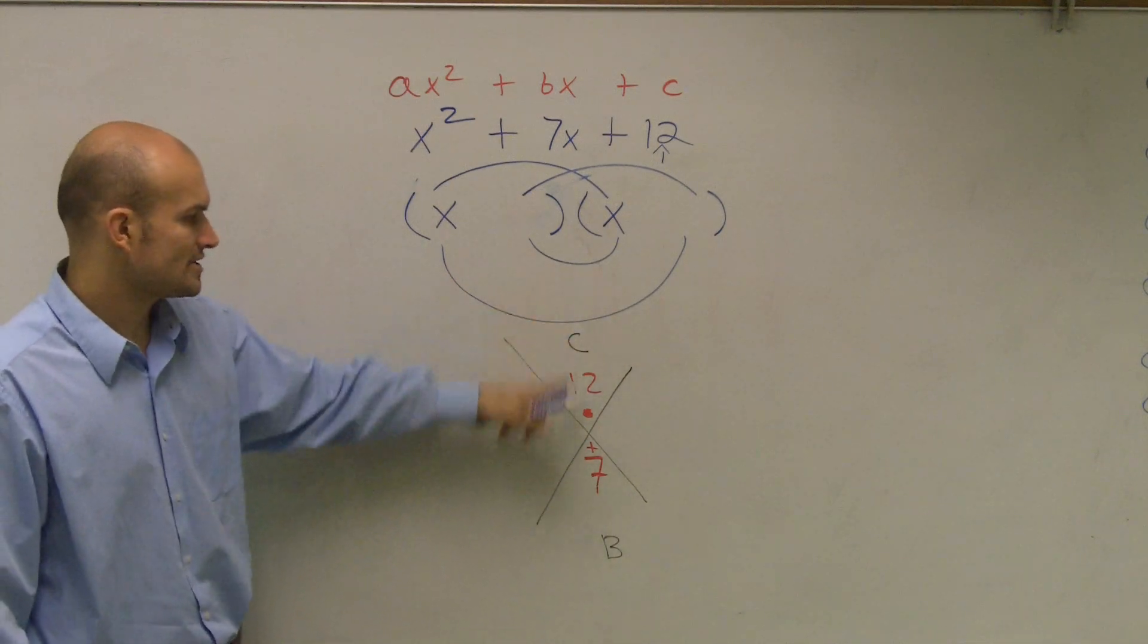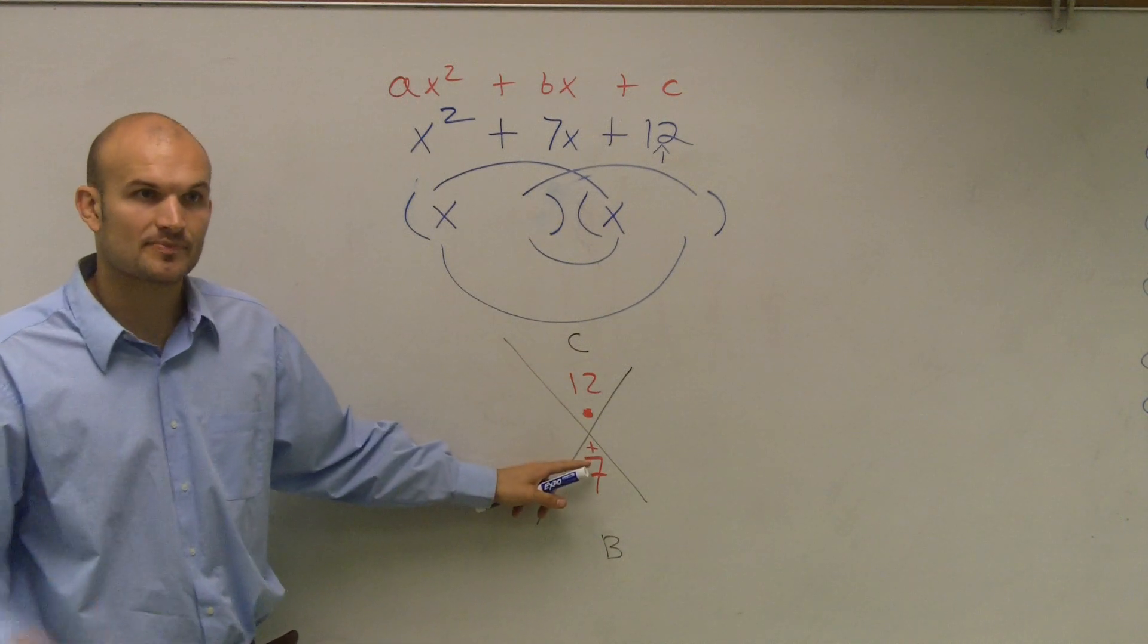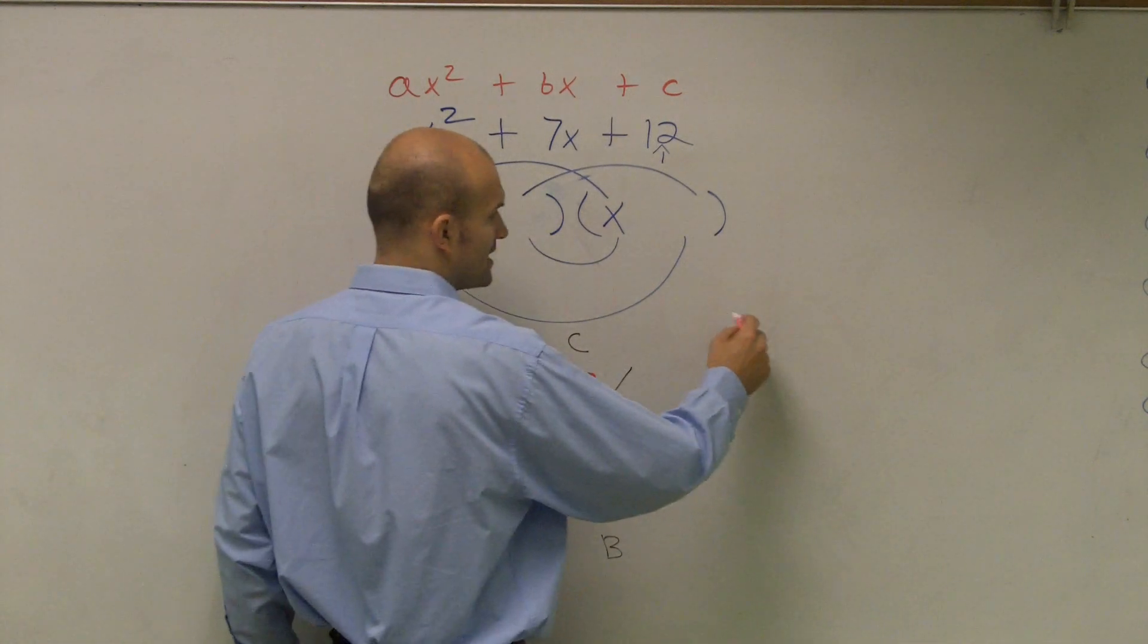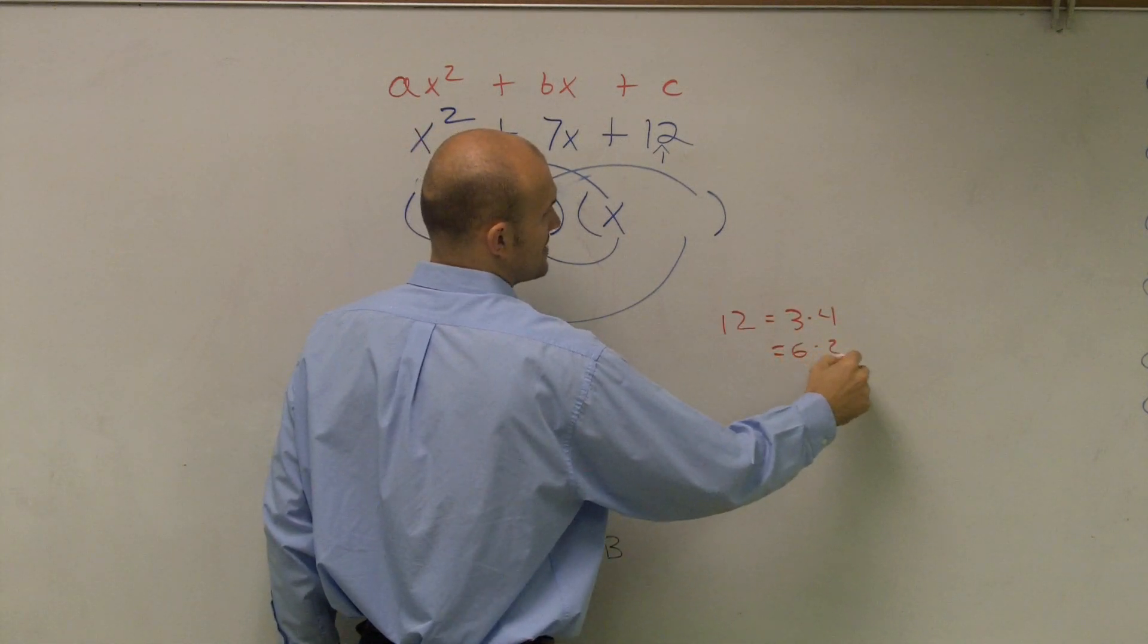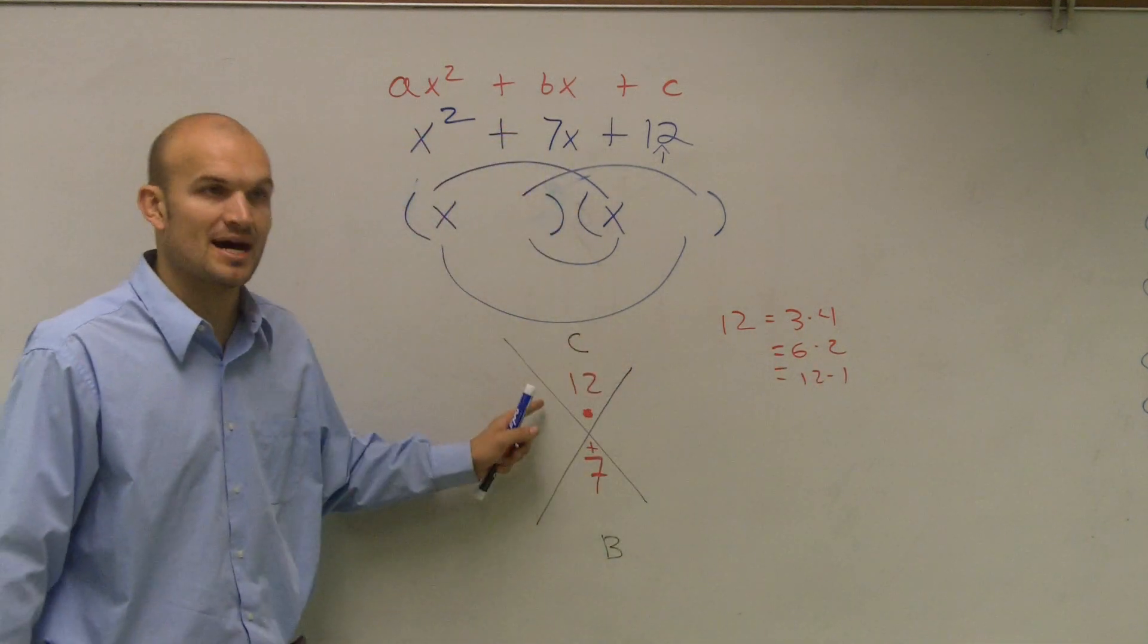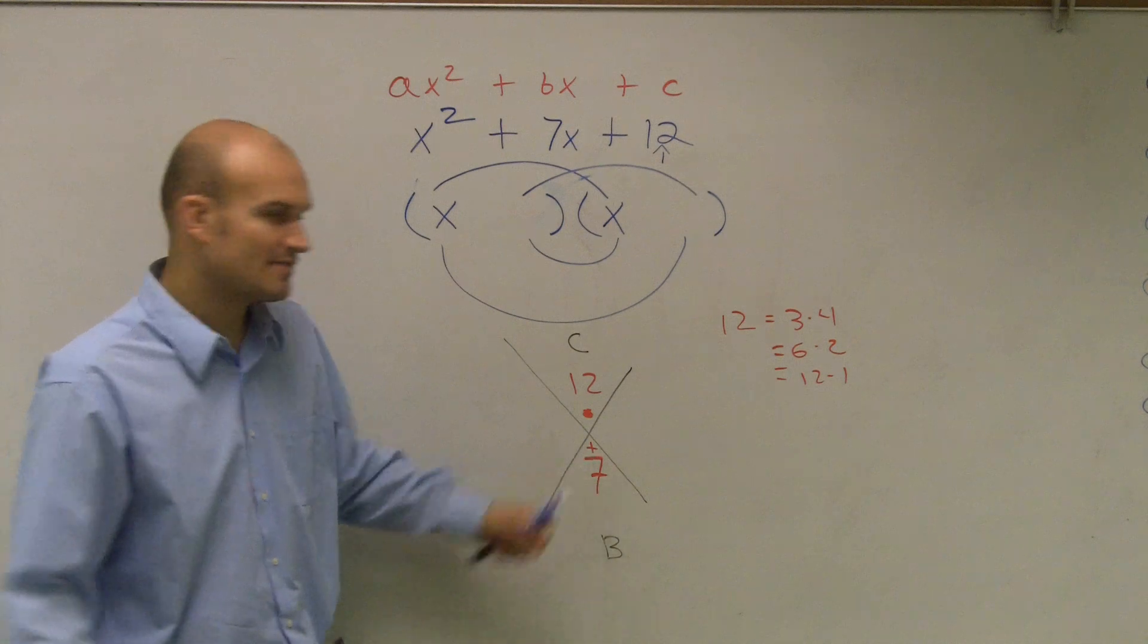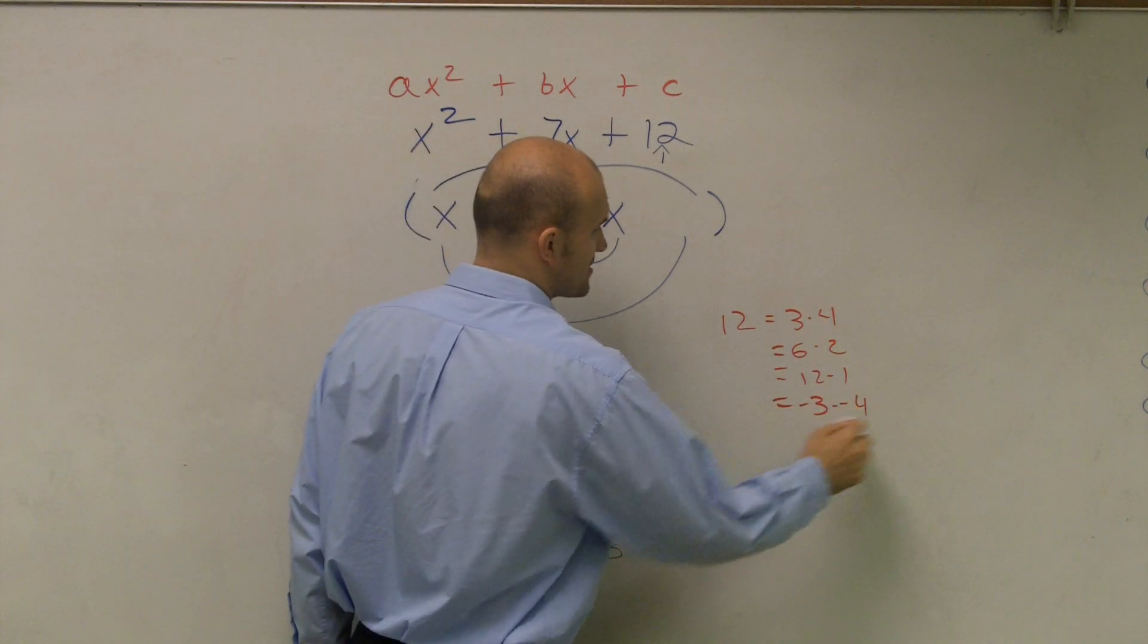So now I need to say, what two numbers multiply to give me 12 and add to give me 7? So you think about all the numbers that multiply to give you 12. That could be a positive 3 times 4, 6 times 2, 12 times 1. Right? What two numbers multiply to give you a positive 12 but add to give you 7? And actually, we should now start thinking about the negative numbers as well.